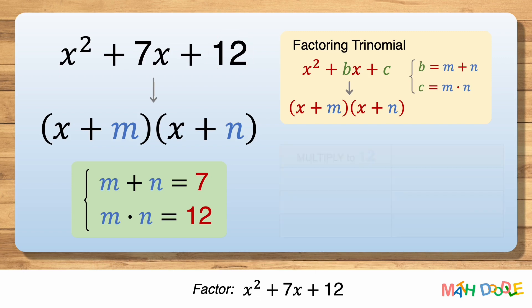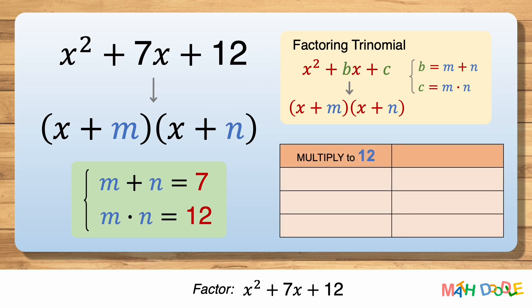First, let's think about all the combinations of two numbers that multiply to 12. 1 times 12 is 12, 2 times 6 is 12, and 3 times 4 is also 12.